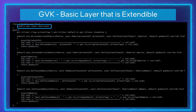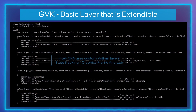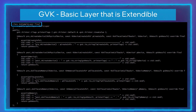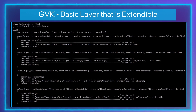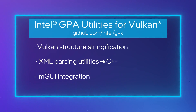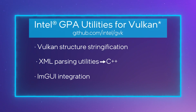The last thing that I'm going to discuss today is GVK's basic layer, which can be extended to create your own custom Vulkan layers. Intel GPA uses custom Vulkan layers built on GVK's basic layer for state tracking within the frame analyzer tool. The sample layer that builds with GVK is rudimentary and simply listens for the creation of an instance, a device, and the allocation of memory — but from there, very powerful tools can be built. GVK provides additional functionality not covered here, for example, stringification for all Vulkan structures, utilities for parsing the Vulkan XML and generating C++ code, and ImGui integration. See the links below for more information.